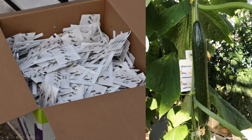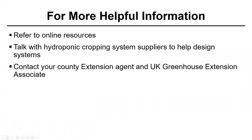Here are some examples of sachets that can be placed in the crop or on the plant, such as the image on the right showing a greenhouse cucumber. I hope I've given you a general overview of the basics of hydroponic systems, how to control the environments, and that you can produce an optimal greenhouse crop. To learn more about hydroponic systems, crops, or anything else about hydroponics, I would recommend referring to online resources, talking with hydroponic crop and system suppliers to help design a system, and contacting your county extension agent and the UK Extension Association.